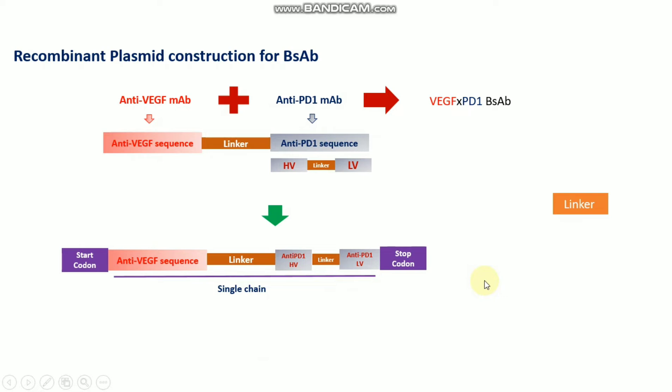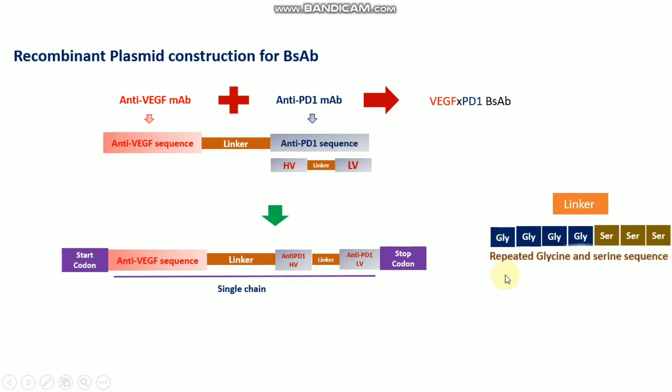This linker is the repeated sequence of glycine and serine, which are hydrophilic amino acids, and that's why it does not influence the solubility of this kind of plasmid. After getting this recombinant plasmid, we need to transfer it to a mammalian system or E. coli system, and then we will get the antibody.